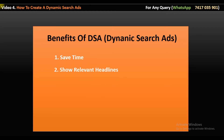Headline one and headline two are not manually written in DSA dynamic search ads. Google itself creates headline one and headline two for your dynamic search ads. Third point is constant automatic update to your ad copy. This is what we need to know about DSA dynamic search ads.